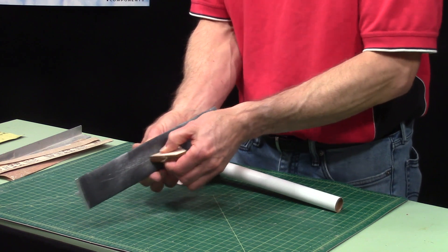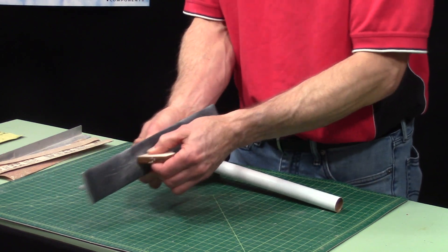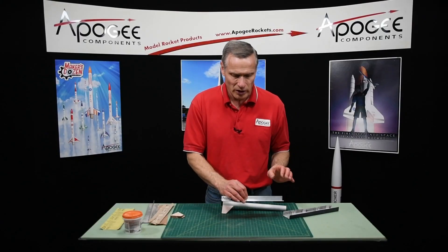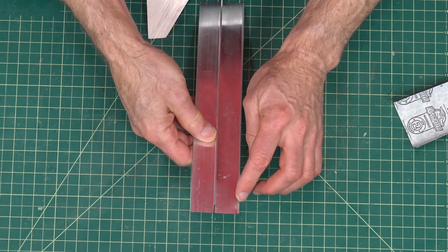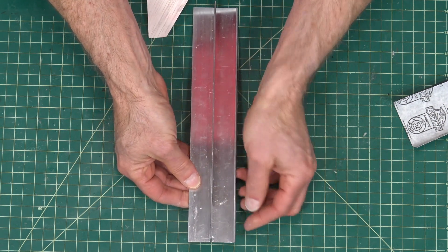And then you can simply sand just like that. The new improvement that I've made to this one is if you look at the end, one end is flat and the other end is radiused.